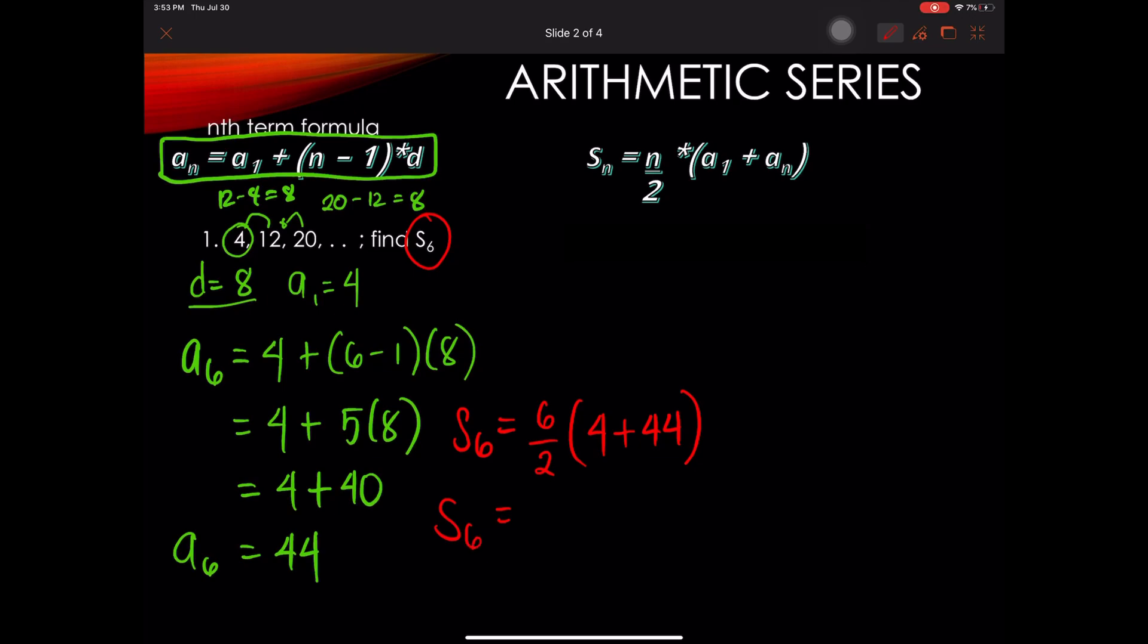So now we have S sub 6 is equal to 3 times 48, and 48 times 3 is equal to 144. So, the sum of the first 6 terms of this sequence is 144.